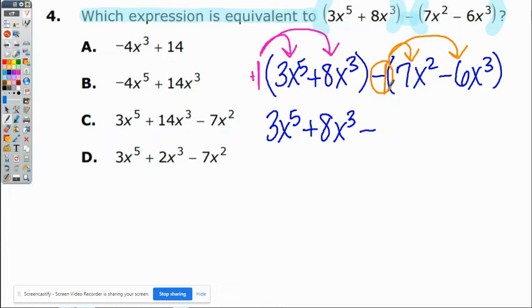Negative times positive is negative. Notice that 7x² stayed the same value, but now it's just negative. Negative 1 times negative 6x³ just becomes positive 6x³.